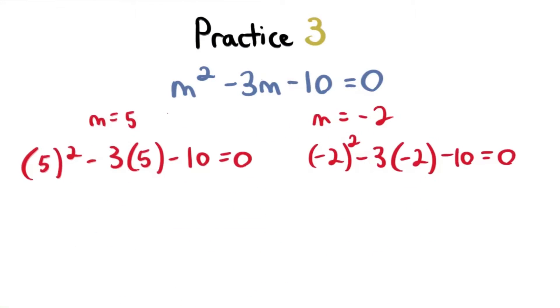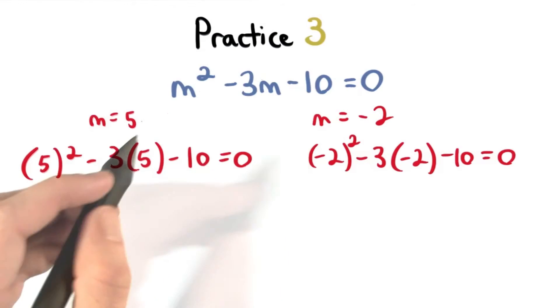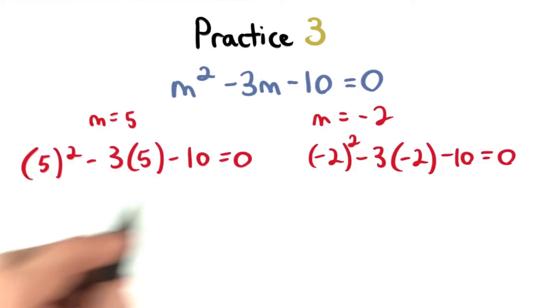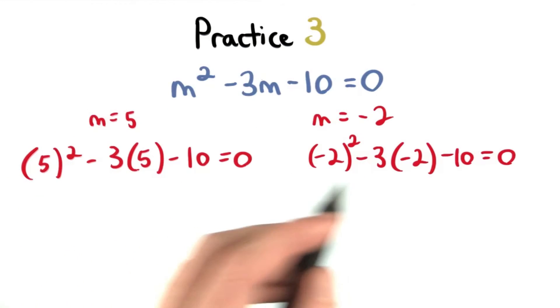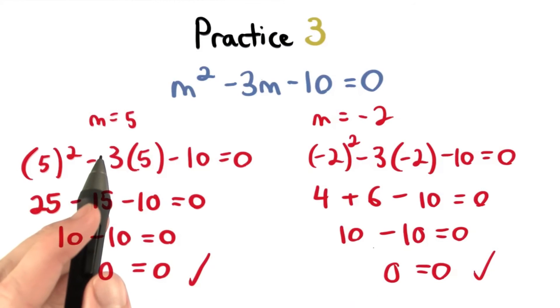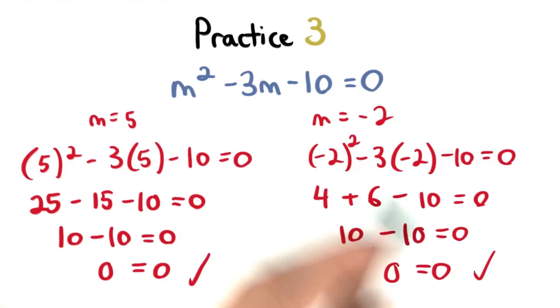And remember, we can always check our answers. We can plug each answer into the original equation to check. I get true statements in the end, so yes, 5 and negative 2 are correct.